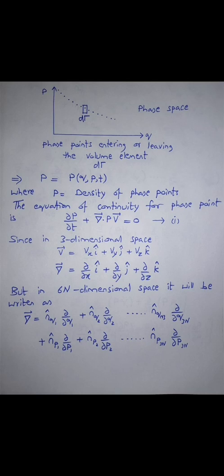Since ρ is defined as ρ = ρ(q, p, t), where q is position, p is momentum, and t is time, ρ is the probability density or distribution function. The equation of continuity for phase points is ∂ρ/∂t + ∇·(ρv) = 0, where ρ is the density of phase points. The phase points enter or leave the volume element dΣ, where the q and p space is called phase space.